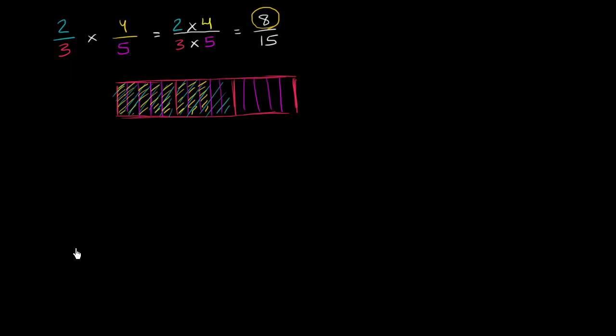You could have thought about it the other way around. You could have started with fifths. So let me draw a whole. And let me cut it into 5 equal pieces, or as close as I can draw 5 equal pieces. 1, 2, 3, 4, 5. 4 fifths, we're going to shade in 4 of them. It's 4 of the 5 equal pieces. 3, 4.